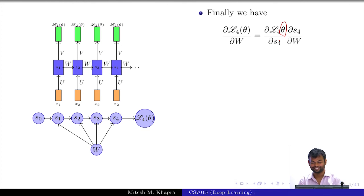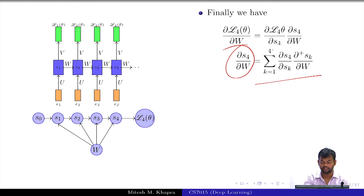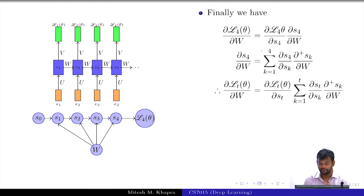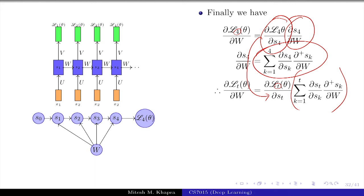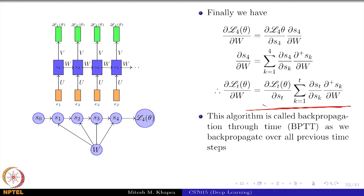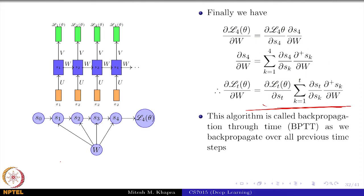So finally, we have a formula for dS_4/dW. That is exactly what we derived: a summation of T terms (T=4 for us). In general, for L_T(θ), the formula is this generic expression replacing 4 with T. This algorithm is called back propagation through time, because we have taken care of the ordered network and now have a way of computing this gradient. Once you have this gradient, you can simply apply the gradient descent update.